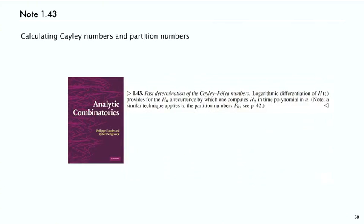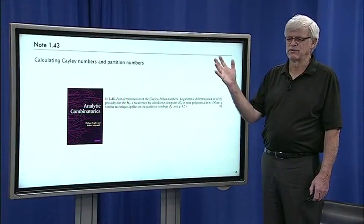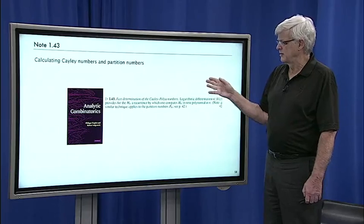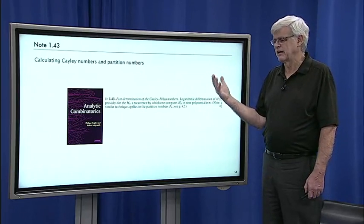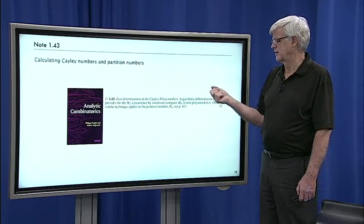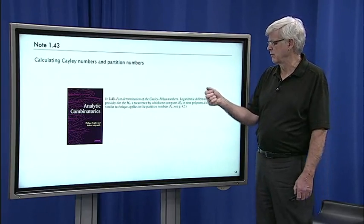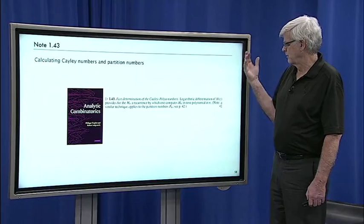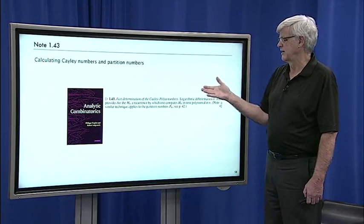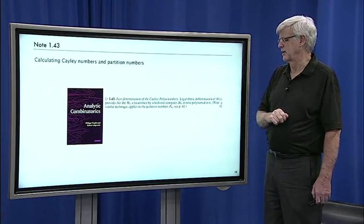And the second exercise to take a look at, 1.43, points out that as I was mentioning, once you have the generating function derived through the symbolic method, you can use that to get information about the quantities of interest by computing with the recurrence. So this is an exercise that has you take a look at that.